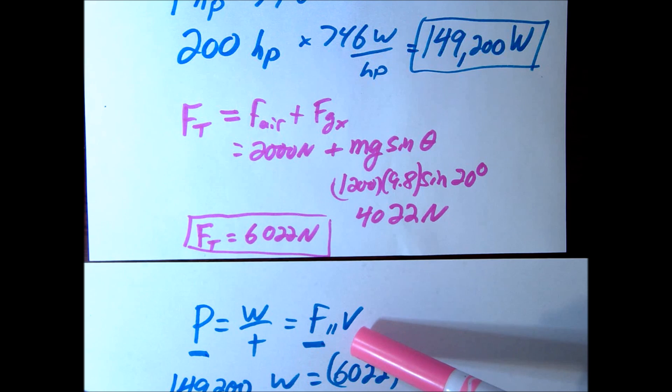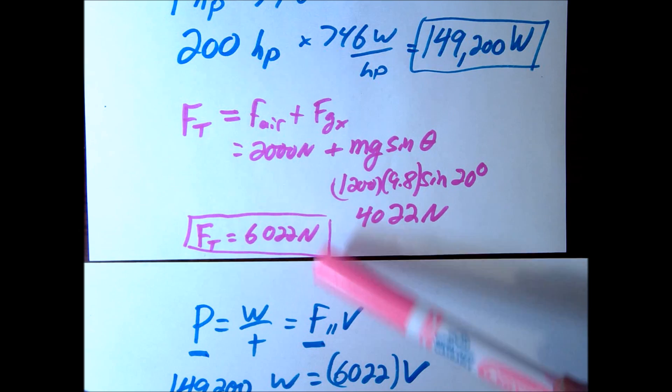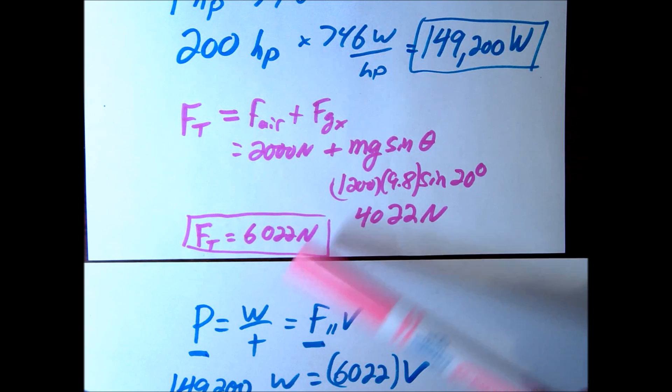if we had a lower velocity with the same amount of power, then we can get that force greater than that 6022. And that would accelerate us up to that peak.